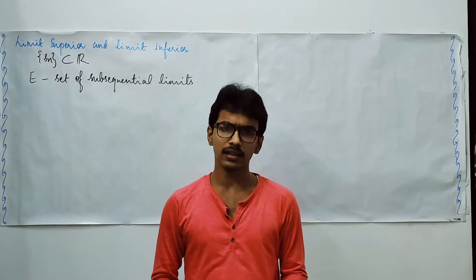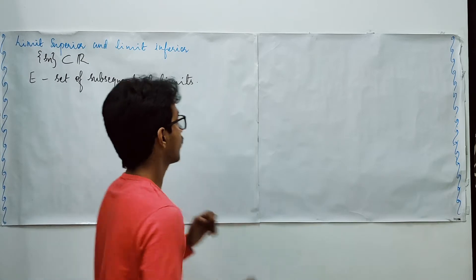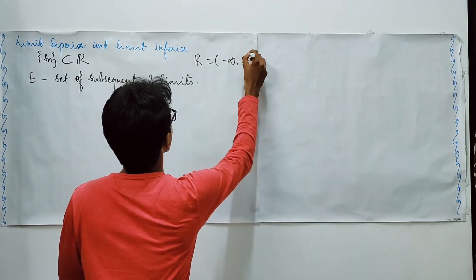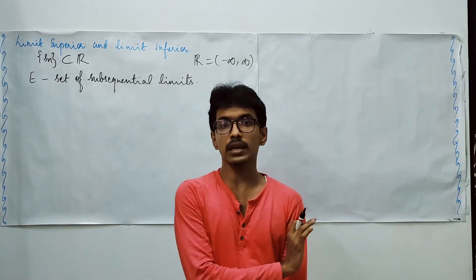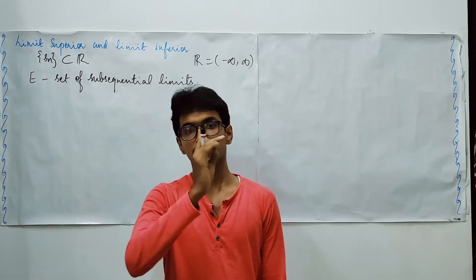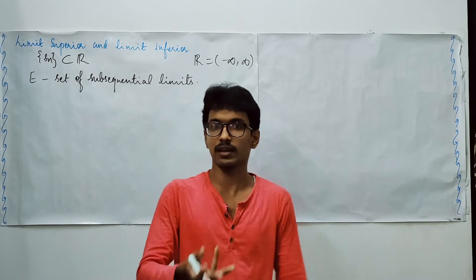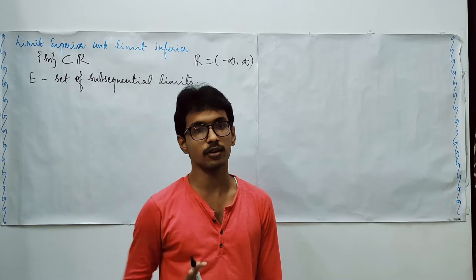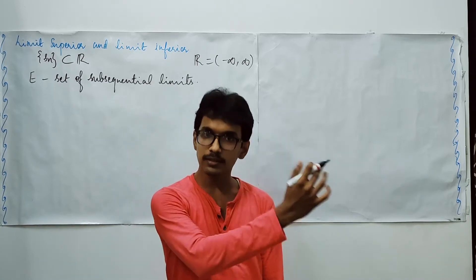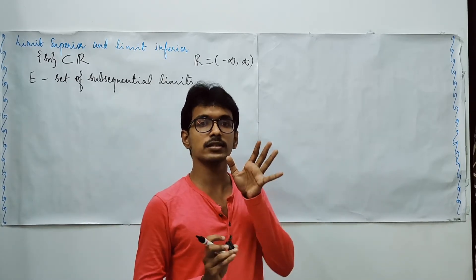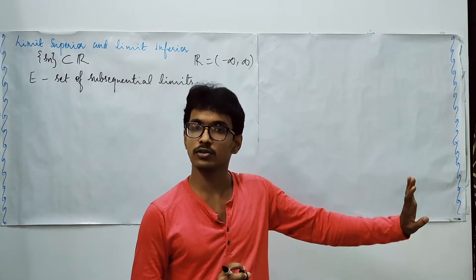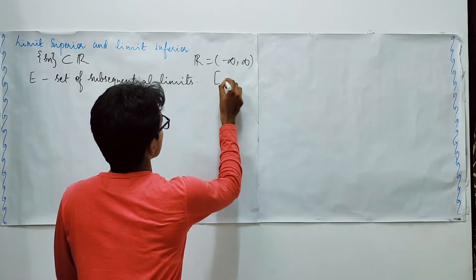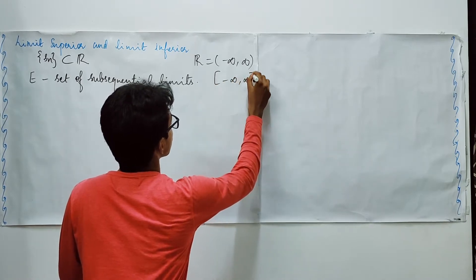What does the extended real line mean? Usually, whenever we talk about the real line, infinity cannot be included — it is something going very close to infinity. But in the extended real line, we are including infinity as well.